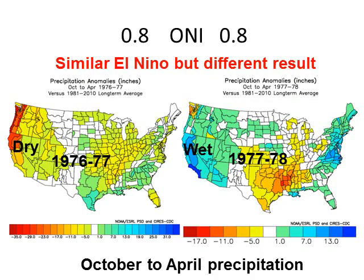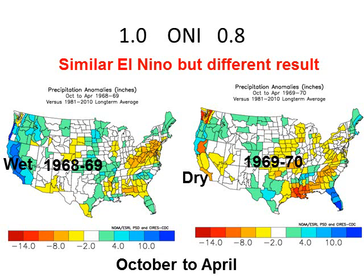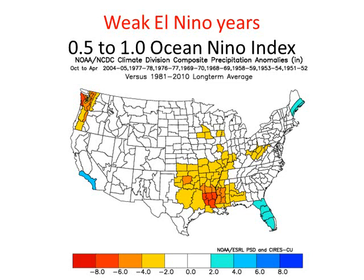Looking at 1976-77 and 1977-78, those two years were flip opposites even though they had similar El Niño strength, showing that other atmospheric factors were clearly impacting weather over the course of the winter. The 68-69 El Niño, with a healthy index of 1.0, was very wet across California. Then 69-70 was actually below normal in Southern and most of Central California — only the Pacific Northwest received above normal. For weak El Niños, the only consistent signal is in extreme southwest California and possibly Florida.